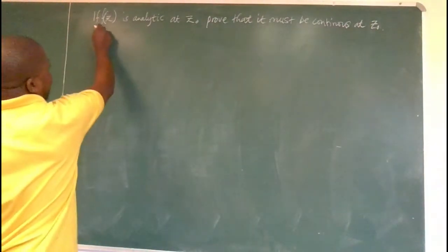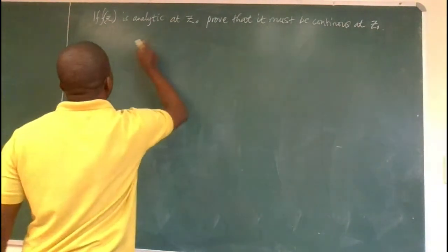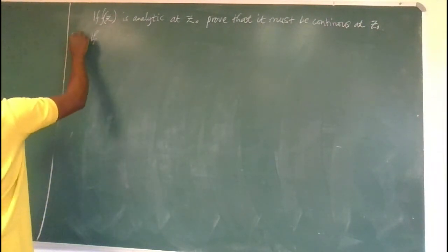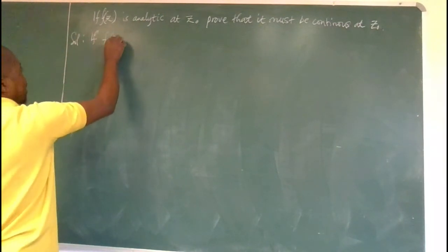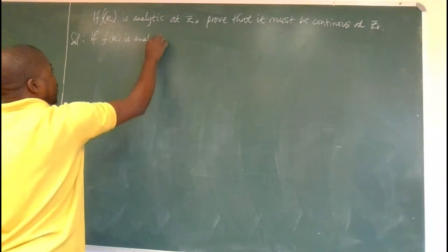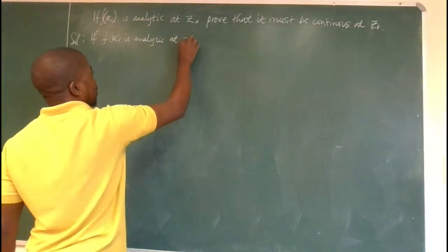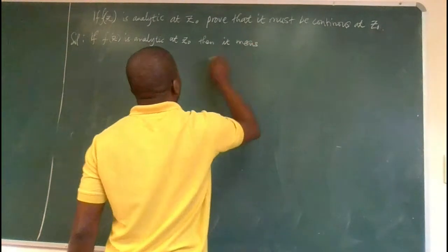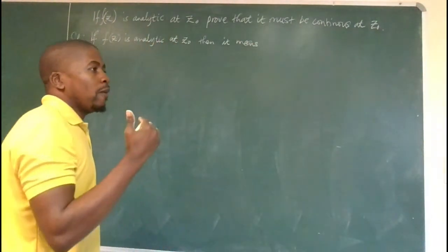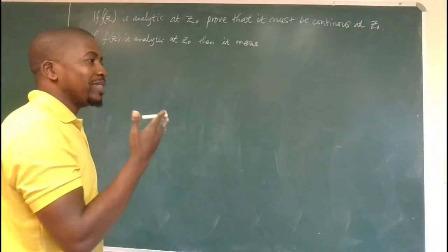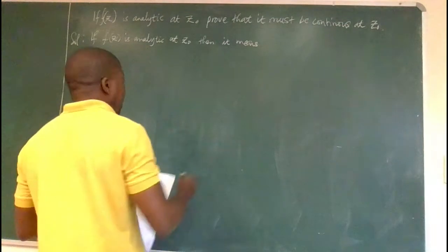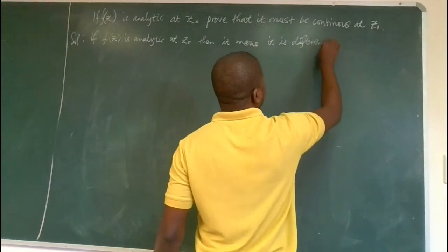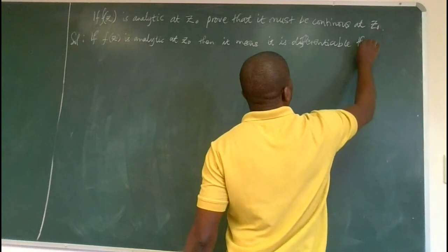By this statement alone, if f of z is analytic at z0, what does that mean? So, we say this is the solution. If f of z is analytic at z0, then remember, for a function to be analytic at some point, it means its derivative exists. So, it means it is differentiable there.